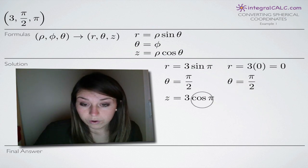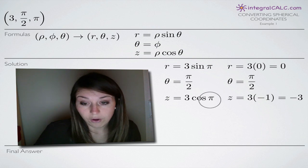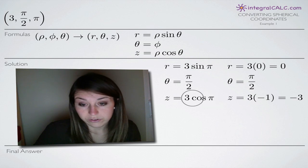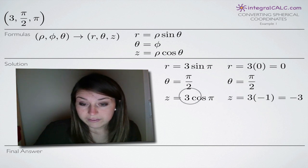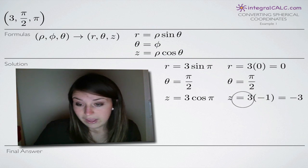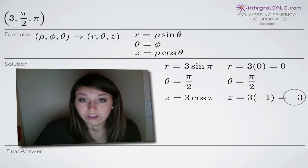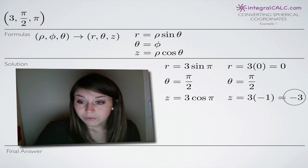And for z equals 3 cos π, we will find cos π. So now that we've simplified as much as we can,